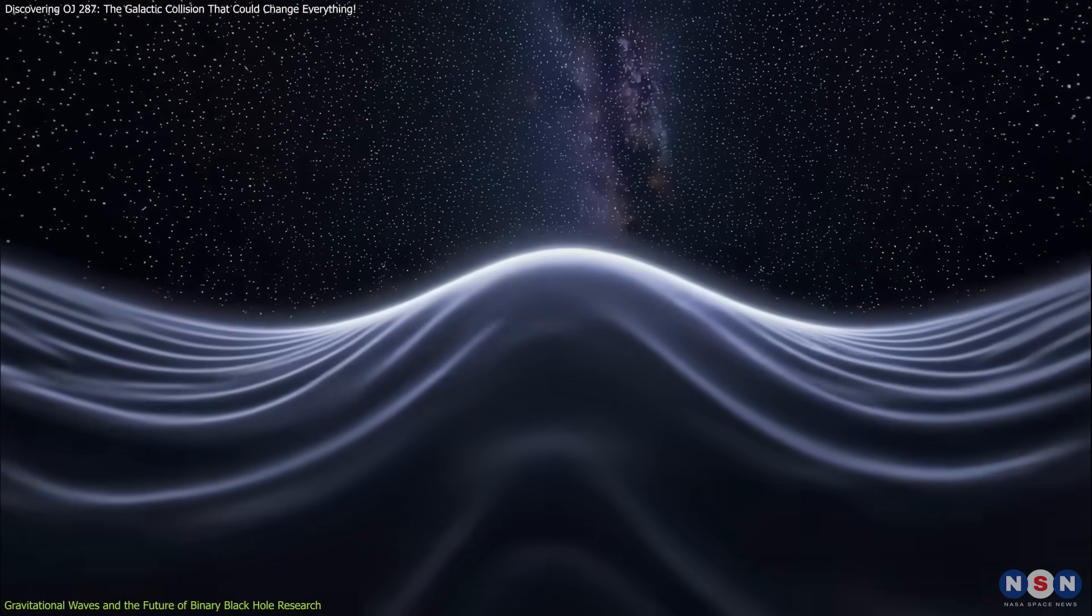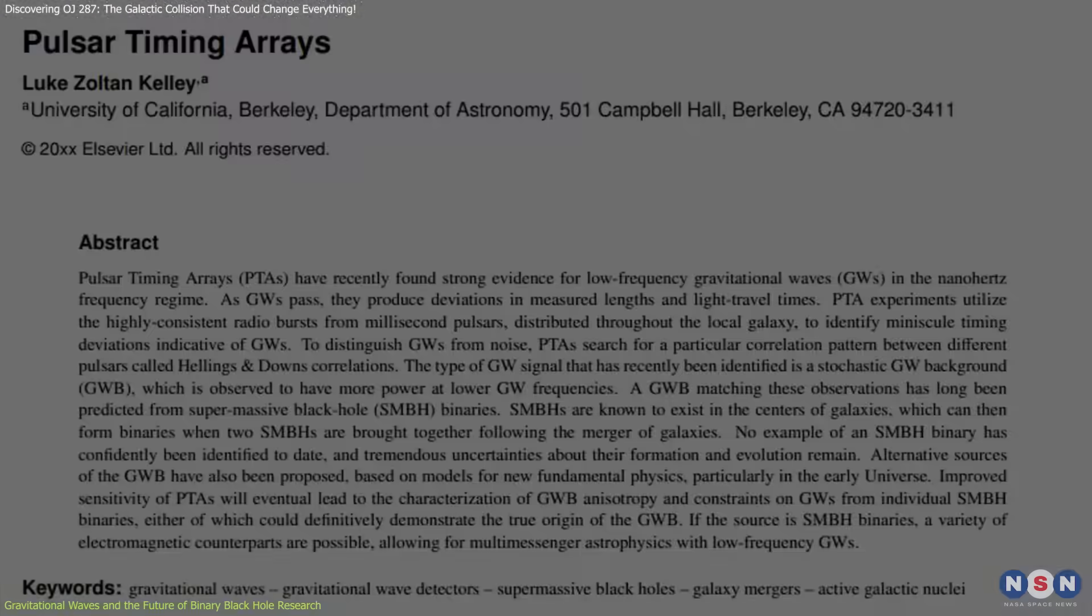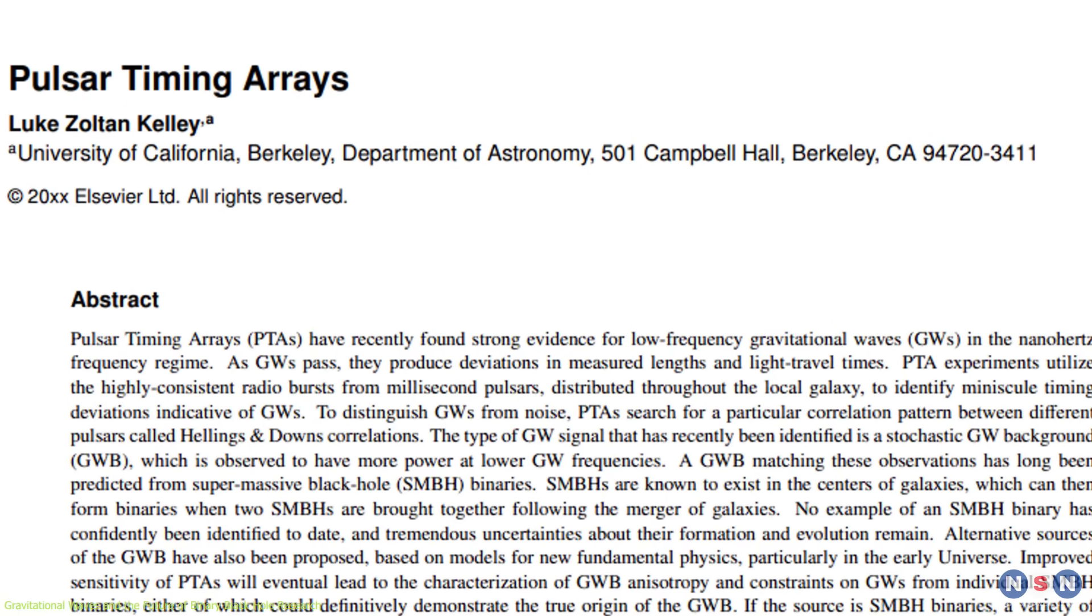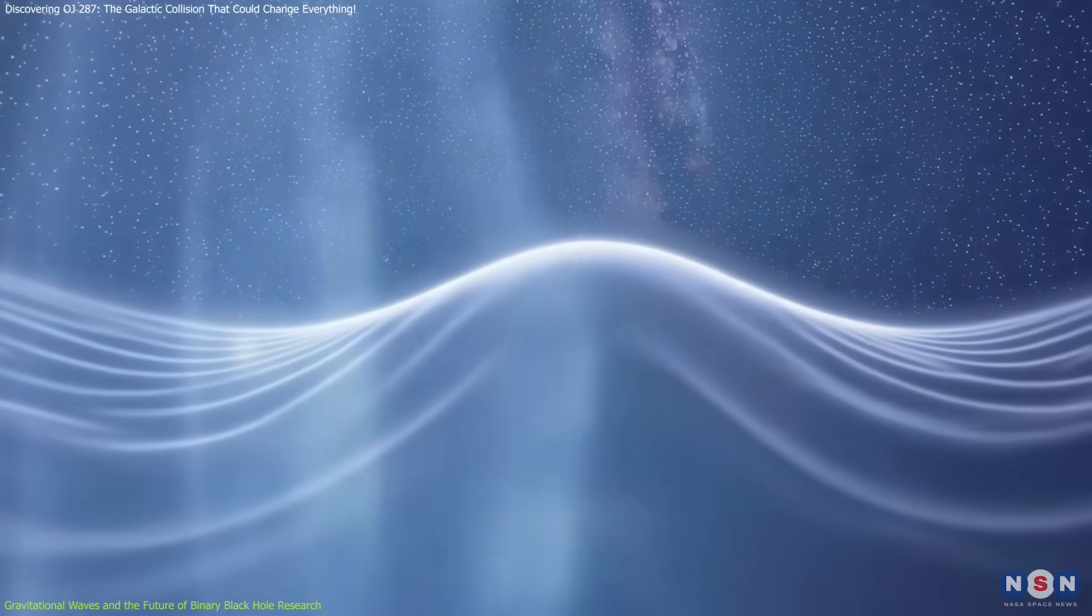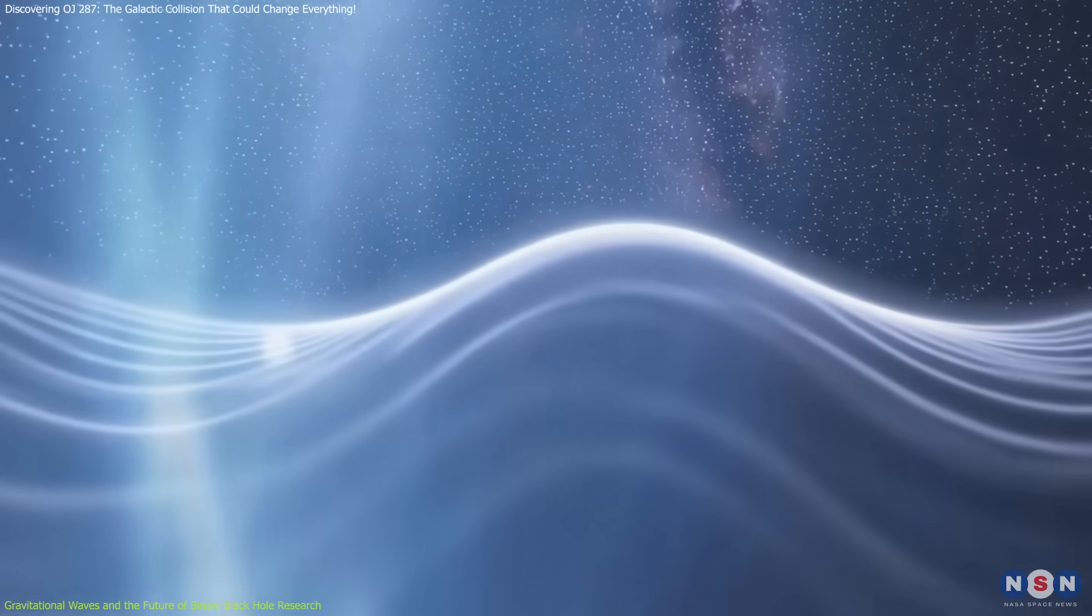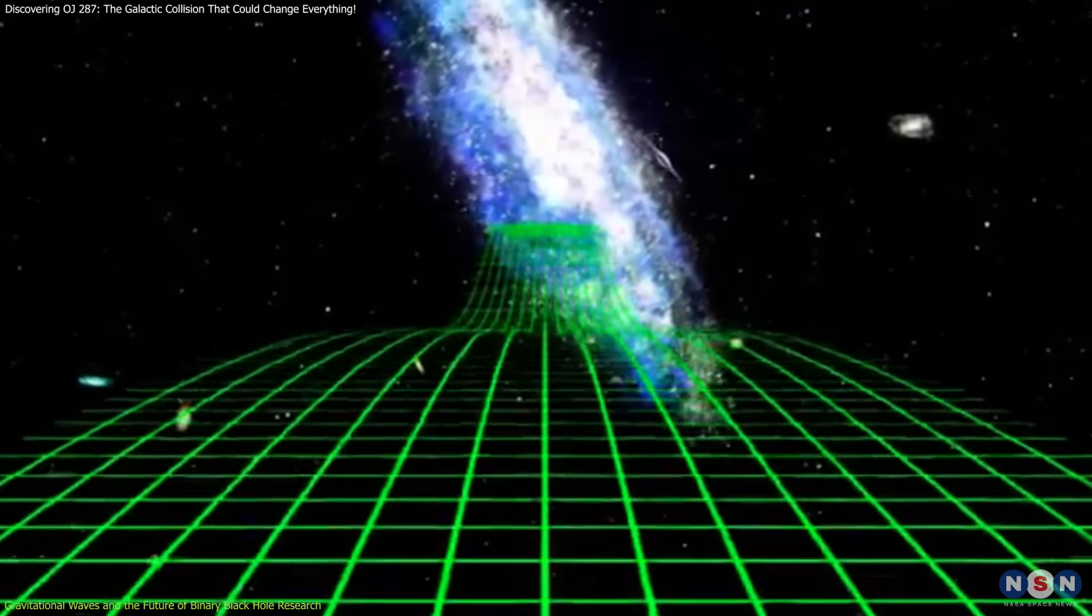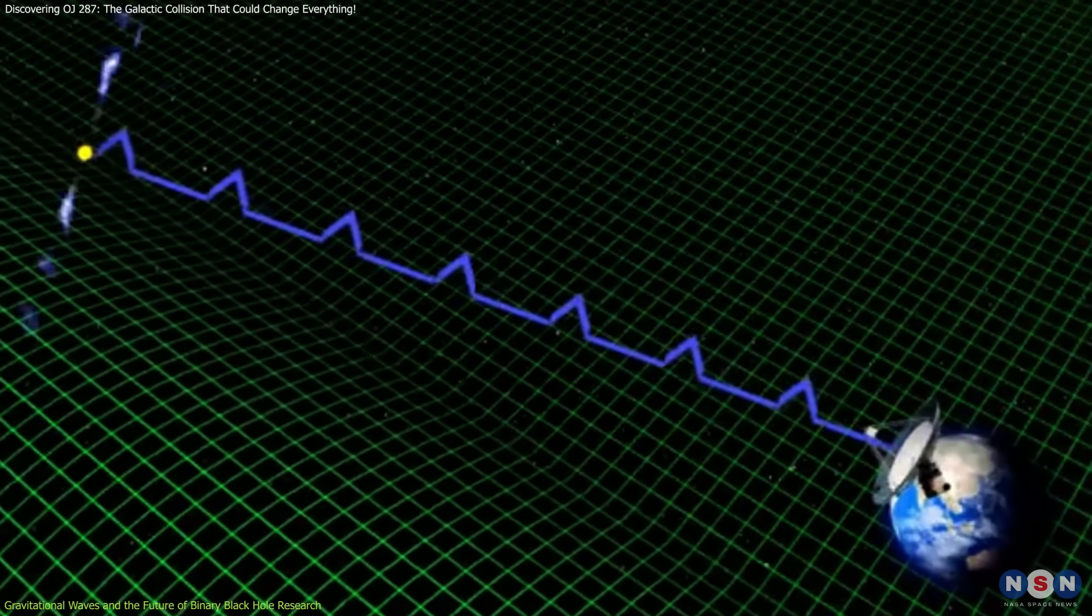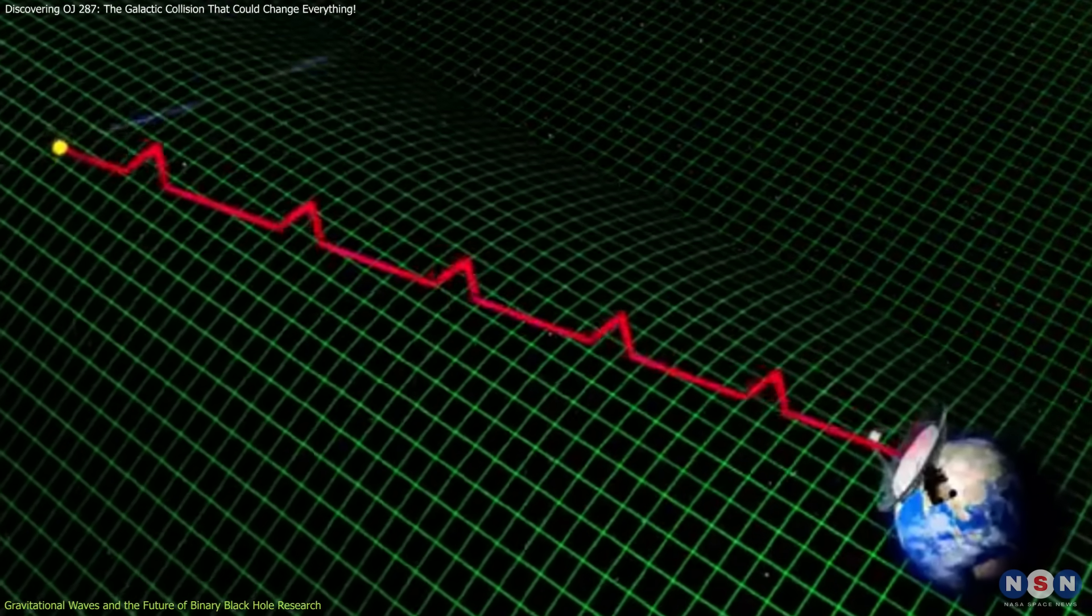In the meantime, gravitational wave researchers are using pulsar timing arrays to indirectly detect these waves. As gravitational waves pass through space, they affect the timing of the regular pulses emitted by neutron stars. By studying these subtle variations, scientists hope to detect the low-frequency gravitational waves generated by systems like OJ 287.